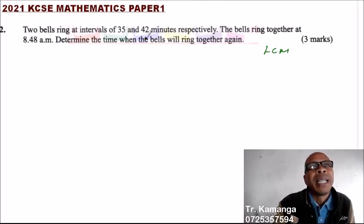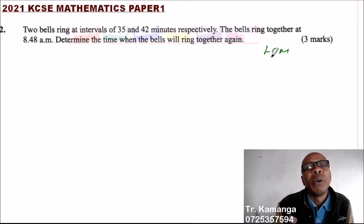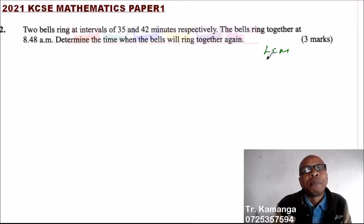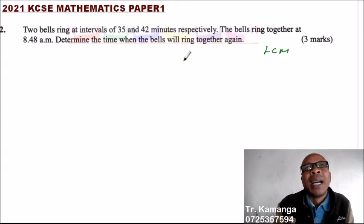This means that after 35 minutes, the first bell will ring. After 42 minutes, the second one rings. 35 minutes again, it rings until there will be a time when they will ring together. And that is, we look for the least common multiple.